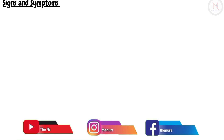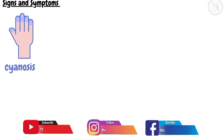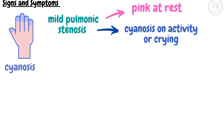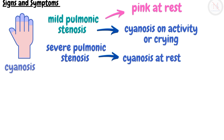The most significant symptom seen in tetralogy of Fallot is cyanosis. The degree of cyanosis depends on the severity of the pulmonic stenosis. Infants with mild pulmonic stenosis may be pink at rest and become cyanosed on crying or during activity. In severe pulmonic stenosis, however, cyanosis can occur even at rest.